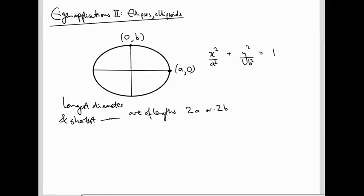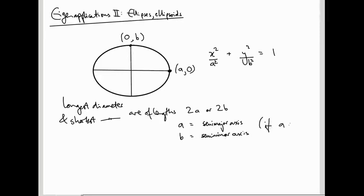The longest and shortest diameters are of lengths 2a or 2b. If a is bigger than b, then a is called the semi-major axis — semi because of this factor of 2 — and b is the semi-minor axis. So suppose somebody gives you an ellipse that's not been squashed in the x, y direction; maybe they take a circle and squash it in some other direction. That's still an ellipse, but what's the equation, and how do you figure out the semi-major and semi-minor axes? That's what we're going to answer using eigenvectors and eigenvalues.